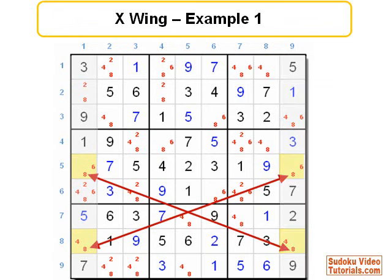So, based on this knowledge, we can eliminate 8 as candidates from all the other cells in columns 1 and 9 as indicated by the green rings.